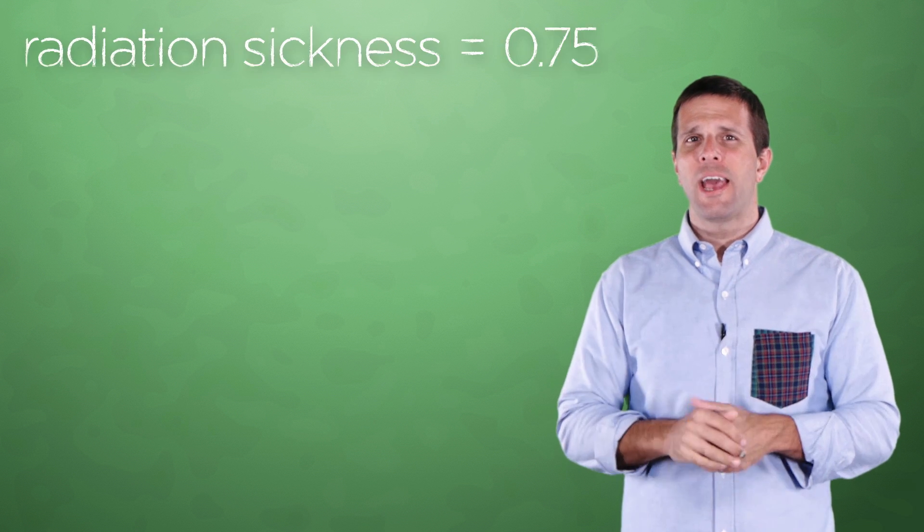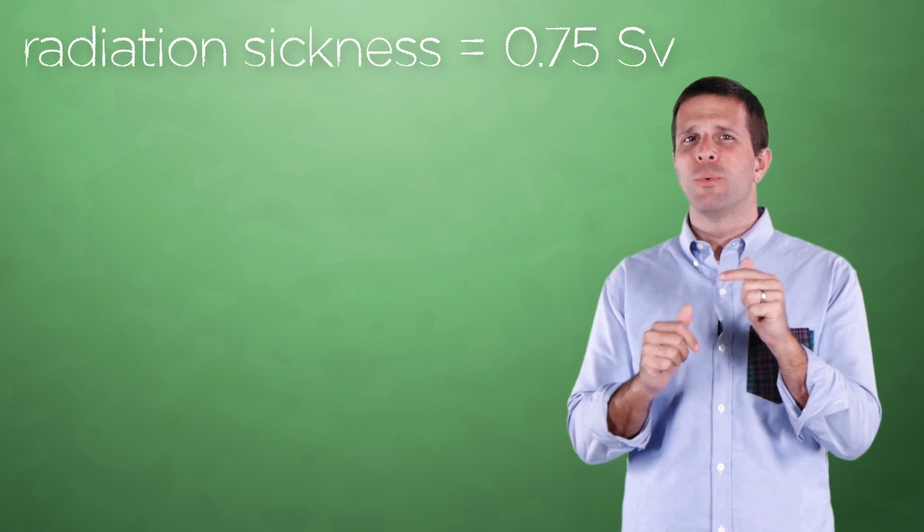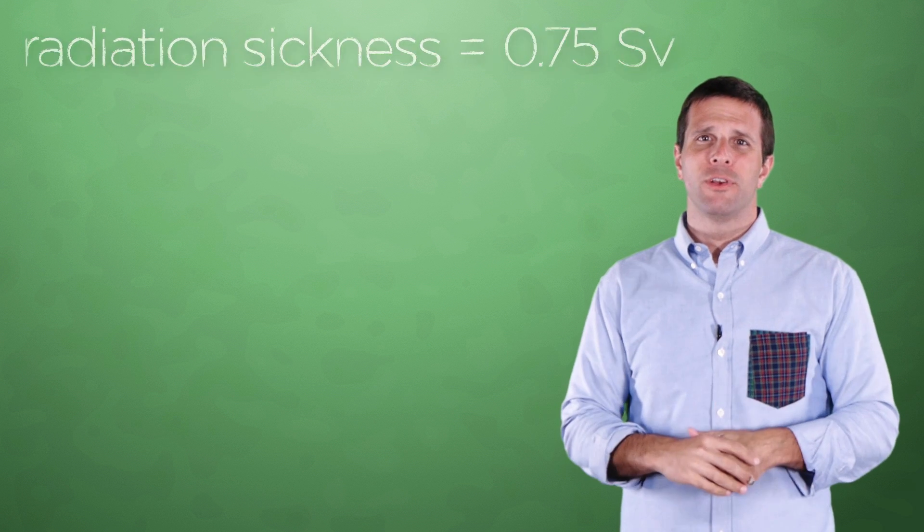And it's not a big leap from that to the radiation sickness dose that begins at .75 sieverts. And remember, when we're talking radiation sickness, we're saying cumulative amounts. So when this stuff starts to build up, you start to get sick.